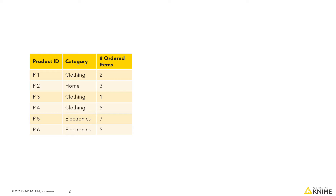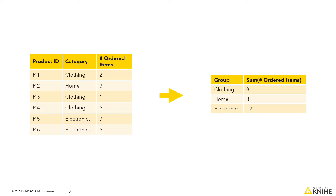Performing data aggregation means creating a summarized version of the data. In this table, each product, indicated by its product ID, is associated with a category — clothing, home, and electronics — and a number of ordered items. You can create an aggregated version of this table by listing all the unique categories and summing the order items for each of those categories.